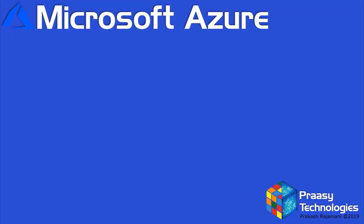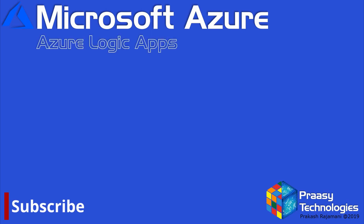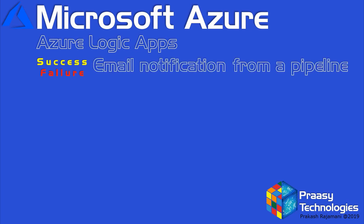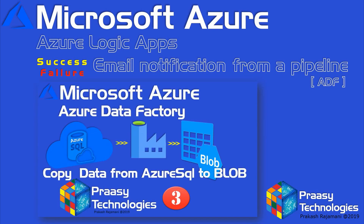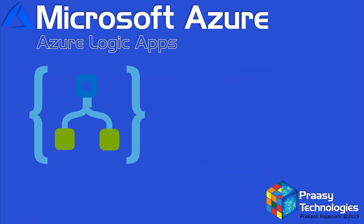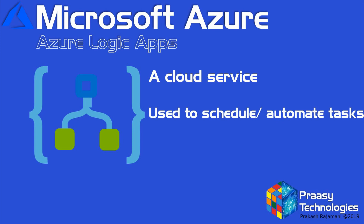Hello. Welcome to Proceed Technologies. I am Prakash. In this session we are going to see what is Azure Logic Apps, and also one important use case scenario: how to send success or failure email notifications from a pipeline using Azure Data Factory. If you do not know what a pipeline or Azure Data Factory is, please refer to my earlier video tutorial in the description below. Azure Logic Apps is a cloud service provided by Microsoft Azure used to schedule and automate tasks, and also used for sending email notifications — which is what we will see in the demo.